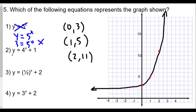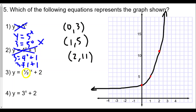For the next choice: does 3 equal 4^0 + 1? 4^0 + 1 = 2, not 3, so that doesn't work either. Choice three is y = (1/2)^x + 2. We know the base is between zero and one, which would give a decreasing function, but the graph shown is increasing — so this cannot be it.